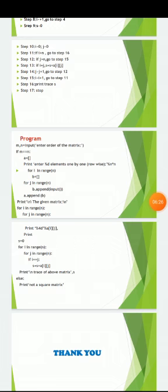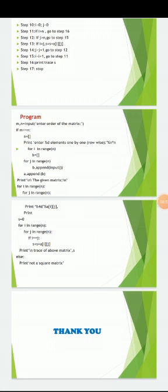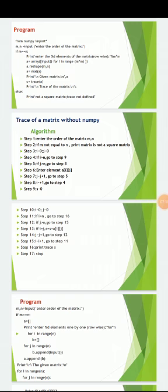At step 9, set s to 0. At step 10, set i to 0 and j to 0. If i+1 tends to i, go to step 5. If i equals j, then s equals s plus a[i][j]. If j+1 tends to j, go to step 12; if i+1 tends to i, go to step 11. Then print the trace s. After obtaining the required result, stop the program. This is all about trace of a matrix with and without NumPy. Thank you.